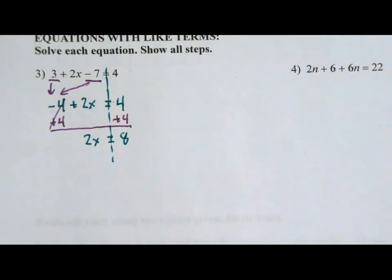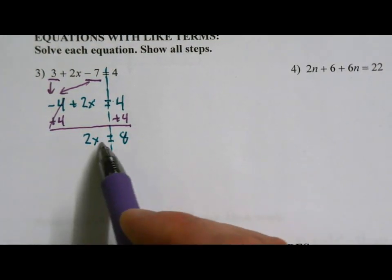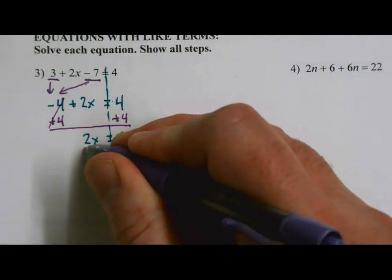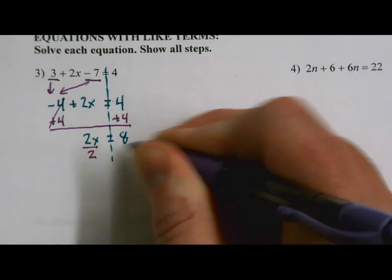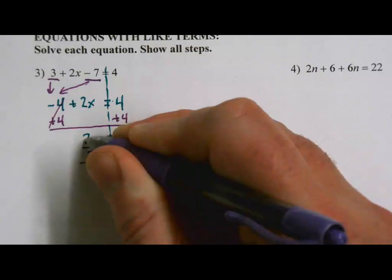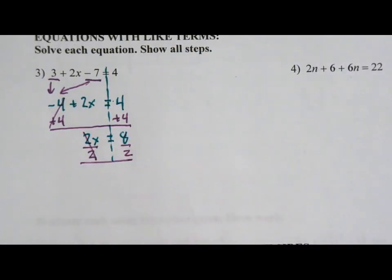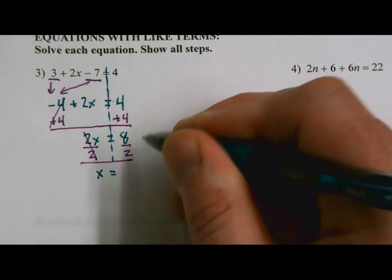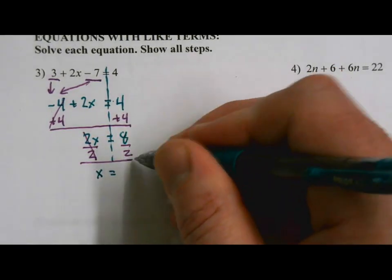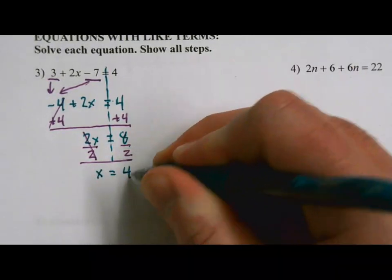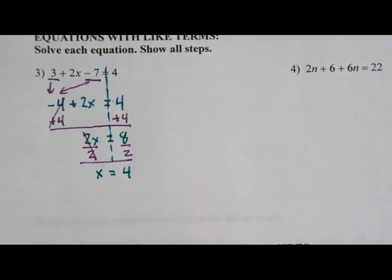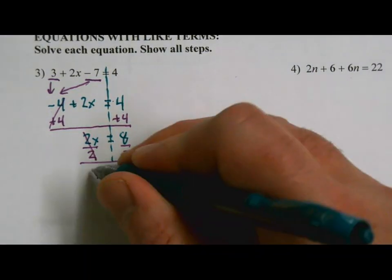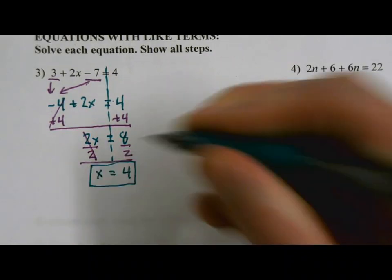We almost have x by itself. Right now x is being multiplied by 2. The opposite of multiplying by 2 is to divide by 2. So we'll divide out by 2 on both sides. 2s will cancel here. And now we have an x all by its lonesome. Equal sign comes down. 8 divided by 2 is 4. x equals 4. I think that's my solution, but we'll come back and check in a moment.